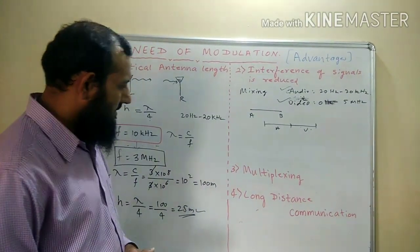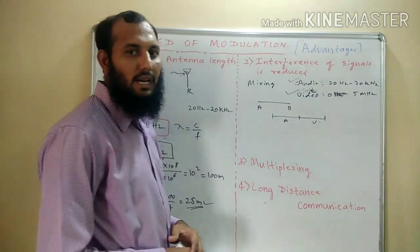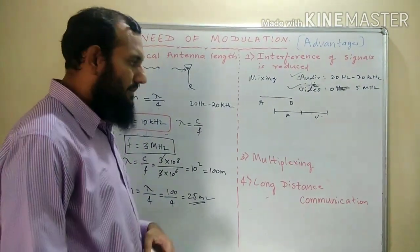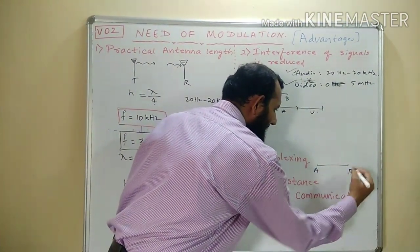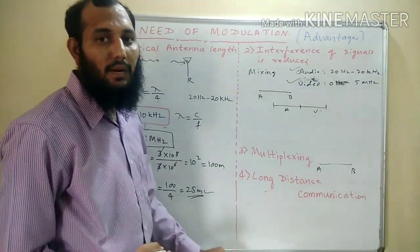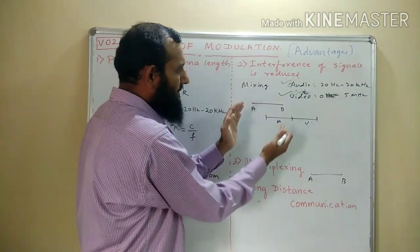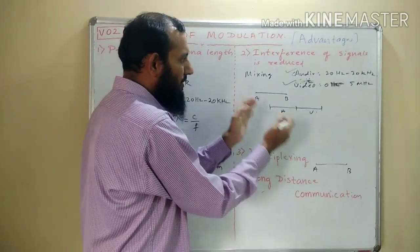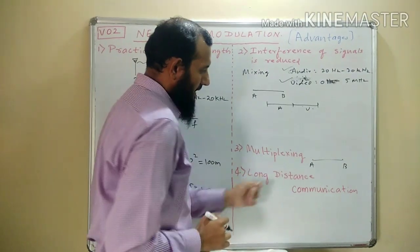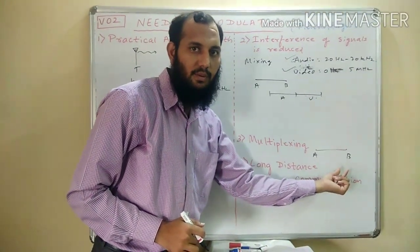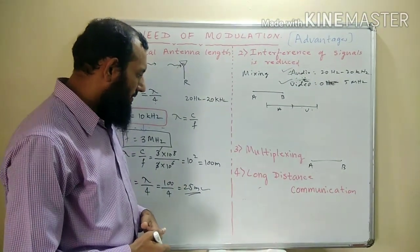The third advantage is that multiplexing can be achieved through modulation. Multiplexing means sending different types of signals through a single channel. As we saw in point two, both audio and video signals were sent through a single channel — this is possible because of the technique of modulation.